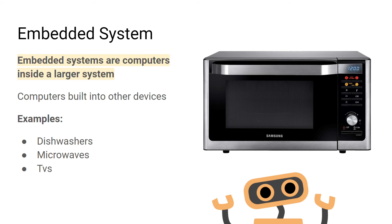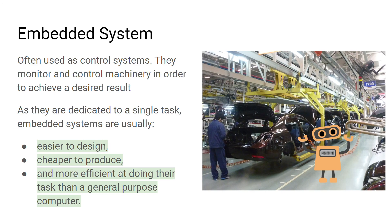Embedded systems are computers built into larger devices. Some examples include dishwashers, microwaves, and televisions. Embedded systems are often used as control systems — they monitor and control machinery. They're dedicated to performing a single task, and they're usually easier to design, cheaper to produce, and a lot more efficient at doing the one task they are designed to do when compared to a general purpose computer.